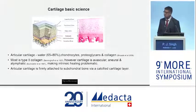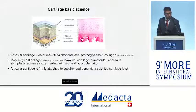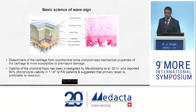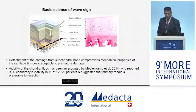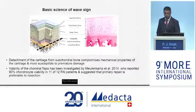Looking at the basic science of cartilage: it is composed predominantly of water and chondrocytes, proteoglycans, and collagen — the predominant collagen being type 2. The articular cartilage is attached to the subchondral bone via the calcified cartilage layer. In the wave sign, we get detachment at the level of the tide mark, and the articular cartilage mechanical properties are therefore compromised, making it more susceptible to mechanical wear.